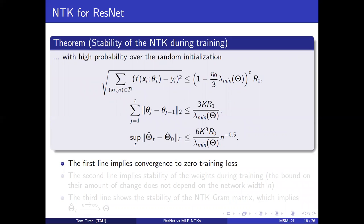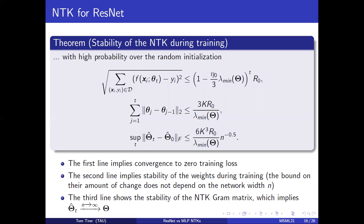The first line here implies convergence to zero training loss. The second line implies the stability of the weights during training around their initialization. And the third line shows the stability of the NTK Gram matrix. Importantly, note that these results hold also for finite, yet large width n.